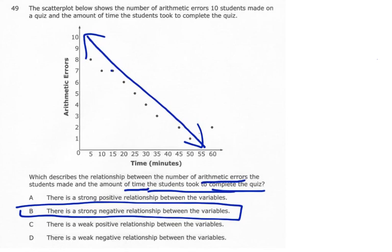So as one thing goes up, for instance time, as time goes up or increases, what happens to the errors? They decrease. So that's what a negative relationship means. As one thing goes up, the other goes down.